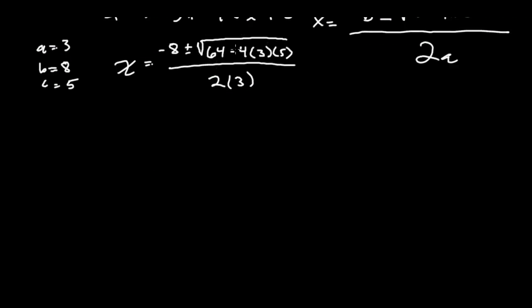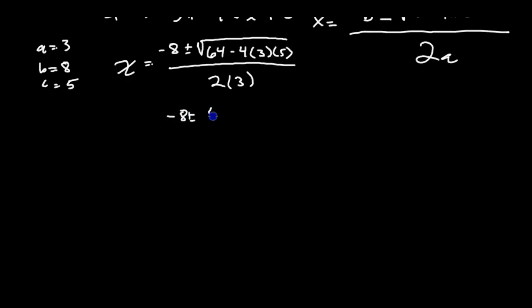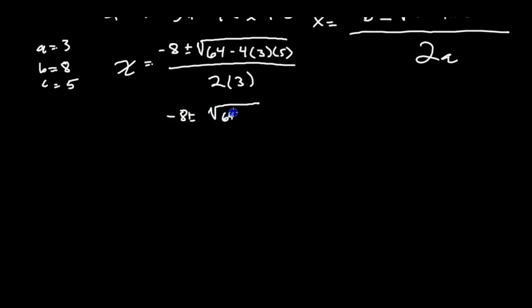To simplify, we have to start with what's underneath the radical here. So we've got negative 8 plus or minus the square root of 64. Negative, positive, positive means I'm going to subtract.